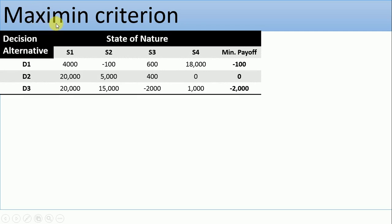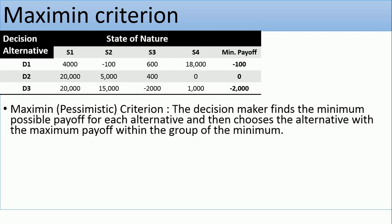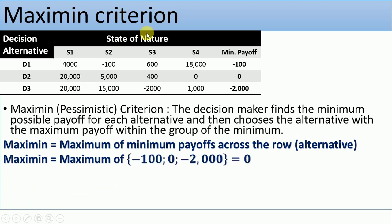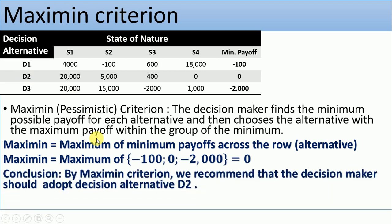Maximin criterion: as the name implies, this is the maximum of the minimum value — minimum payoff across each row. The decision maker finds the minimum possible payoff of each alternative and then chooses the alternative with the maximum payoff within the group of minimums. The maximum of (-100; 0; -2,000) is 0. Going back to the original table, zero falls under decision alternative D2, so by the maximin criterion we recommend D2.